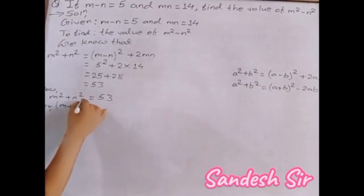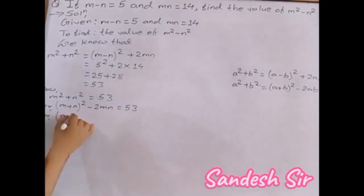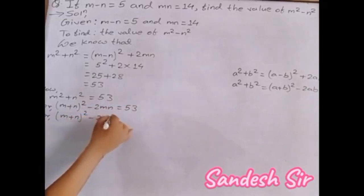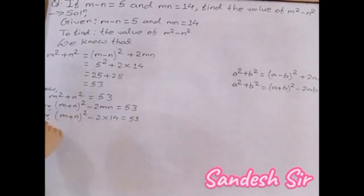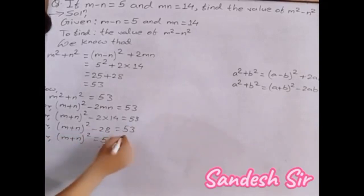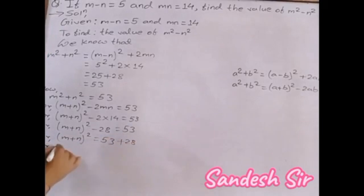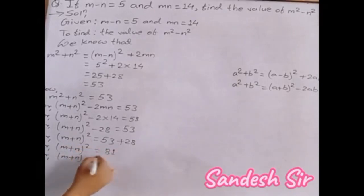Now using m plus n whole squared minus 2mn equal to 53. So m plus n whole squared minus 2 into 14 equal to 53. Therefore m plus n whole squared equal to 53 plus 28, which gives m plus n whole squared equal to 81.